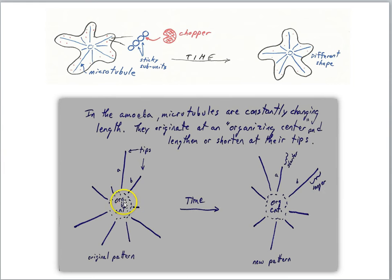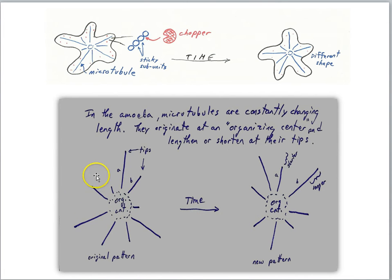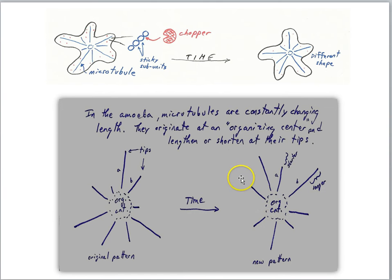Here's our organizing center for microtubules, and here we see our microtubules radiating out, each with a characteristic length. Over time, the lengths of those microtubules will be changing as a result of two processes: the spontaneous assembly of microtubule units, which makes the microtubule get longer, and the action of the choppers, which tends to shorten them.